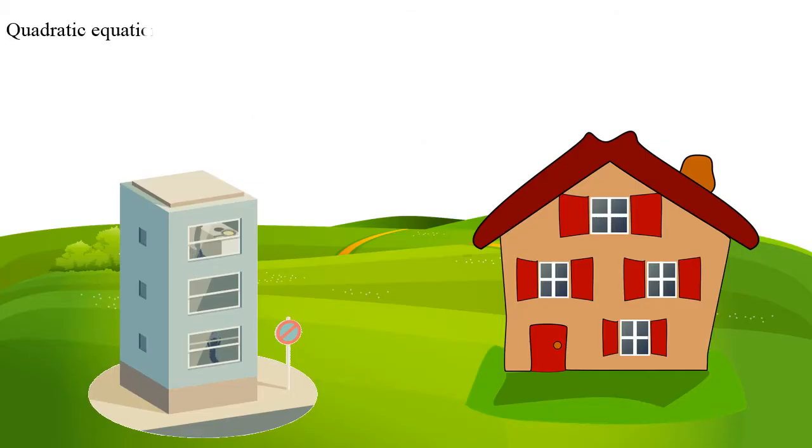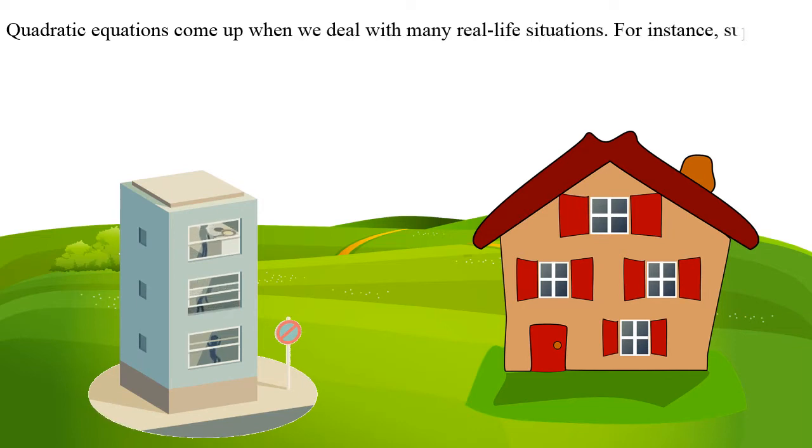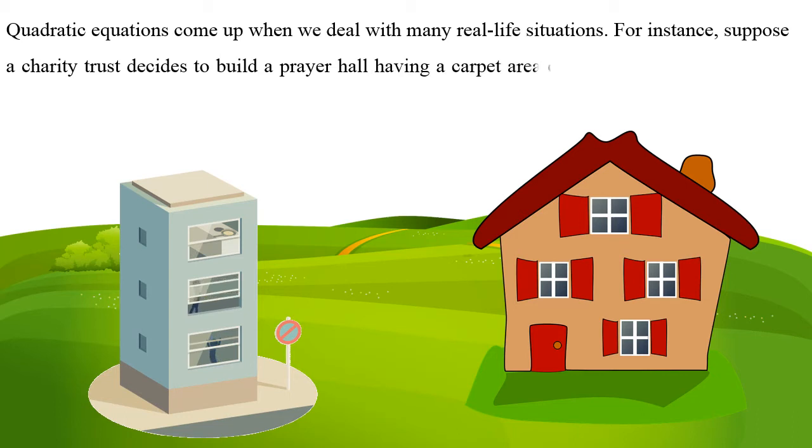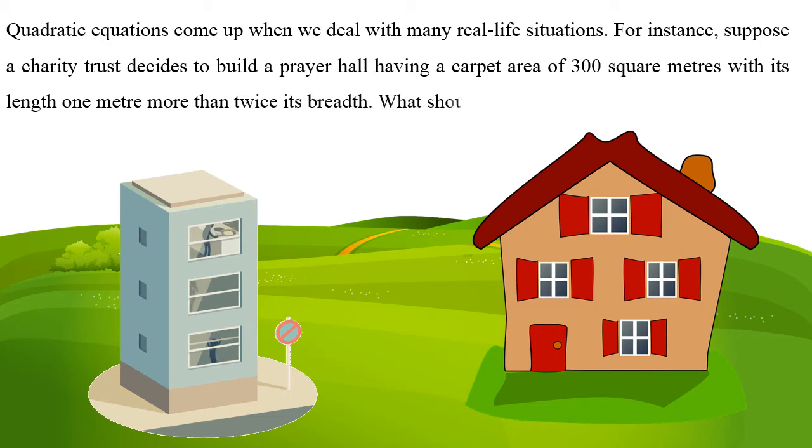Quadratic equations come up when we deal with many real-life situations. For instance, suppose a charity trust decides to build a prayer hall having a carpet area of 300 square meters with its length 1 meter more than twice its breadth. What should be the length and breadth of the hall?